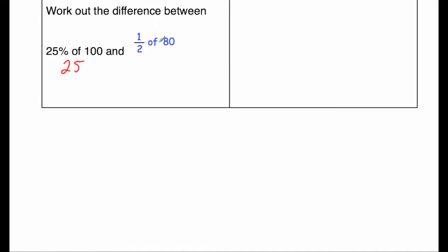Next, we've got a half of 80 and a half of 80 is 40. And we need to work out the difference. So 40 subtract 25 will be equal to 15. So the answer would be 15.